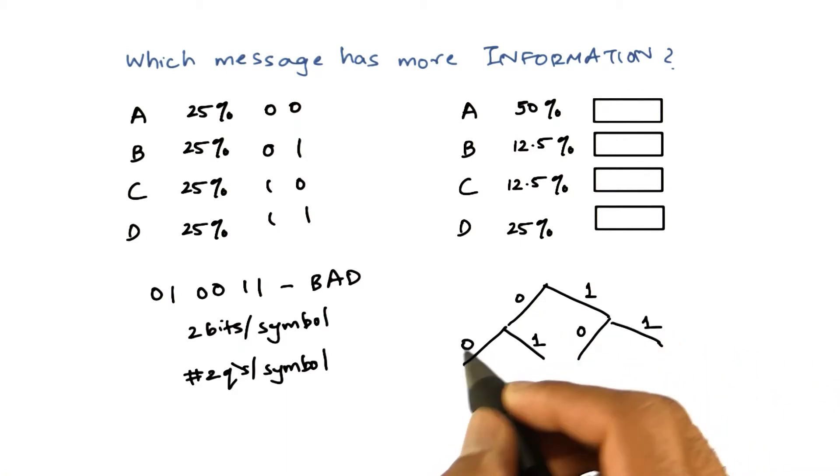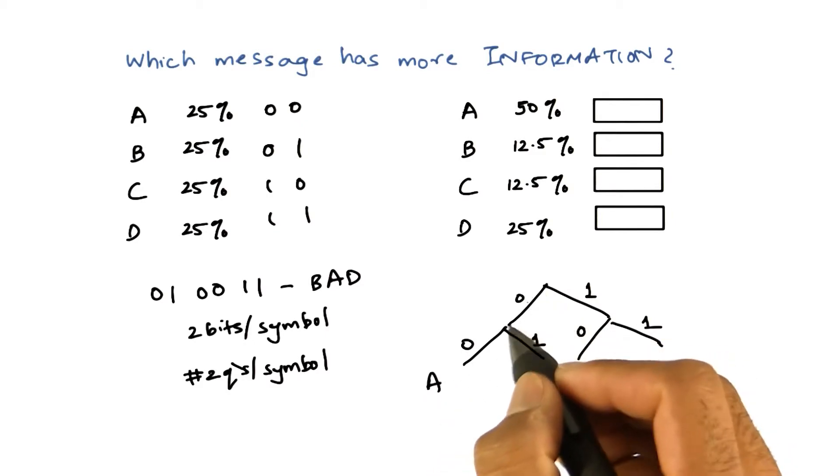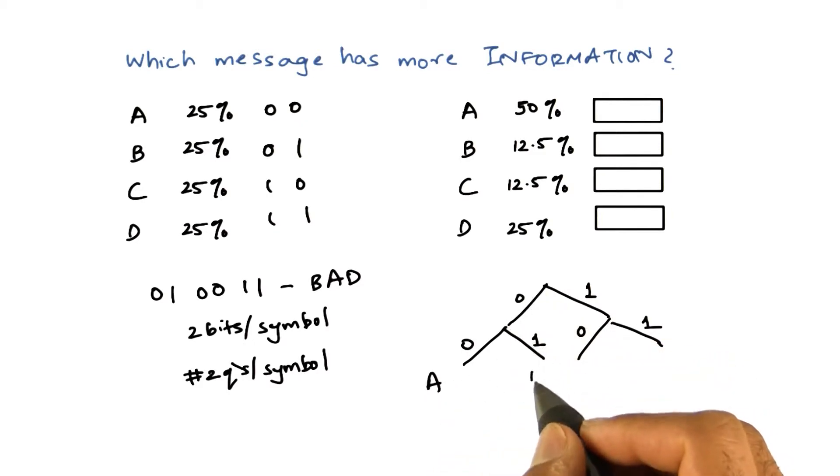So if there are two 0s, it is an A. If it is a 0 followed by 1, it is a B. If it is a 1 followed by 0, it is a C. If it is 1 followed by 1, it is a D.